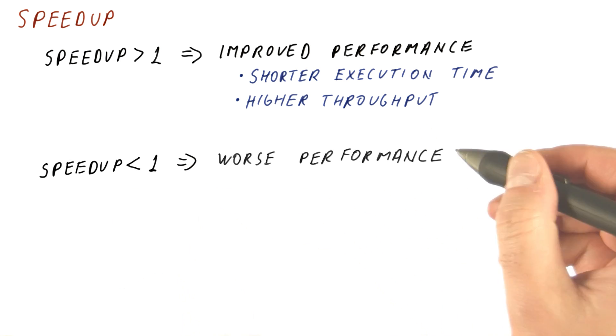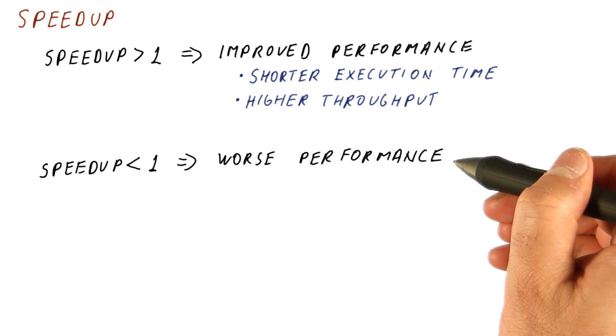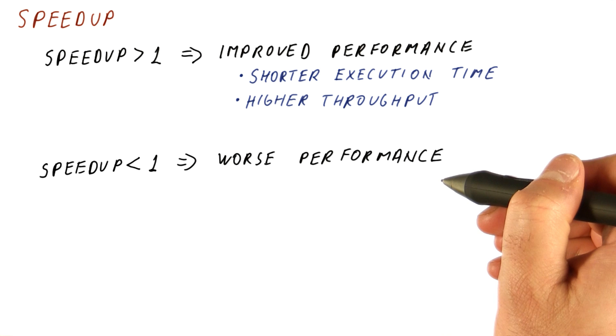A speedup of less than one means that we have worse performance than before. Either it takes longer to execute something, or we get lower throughput than before.